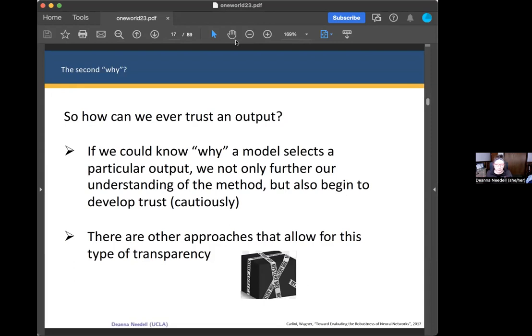There are lots of directions happening here. One is to understand deep models better. I think that's a great direction. The perspective I have is, if we could understand why a model selects a particular output, like why does a pig become an airliner, can we actually see that in a human interpretable way? Then we not only further our understanding of the method, but also begin to develop trust, hopefully cautiously. The good news is that there are approaches outside of deep models that allow for this type of transparency immediately. Those are the methods I'm going to talk about today.